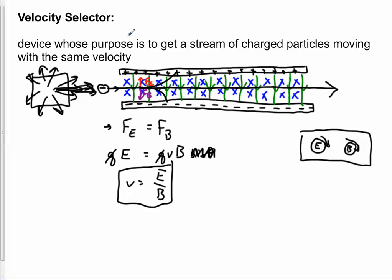So this is actually how you get a stream of charged particles that are all moving with the same speed. It's called a velocity selector and it's a really neat sort of exploitation of E fields and B fields at the same time.